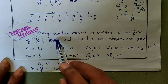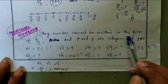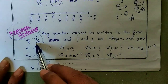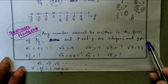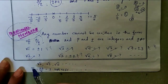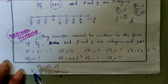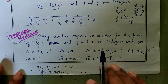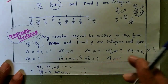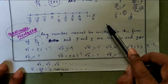Irrational numbers cannot be written in the form of p by q, where p and q are integers and q is not equal to zero. Root two, root three, root five, and pi are all irrational numbers. Thanks for watching my video. Please wait for the next video.